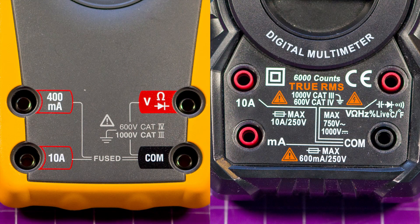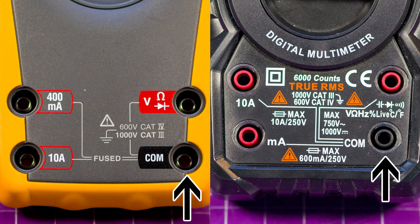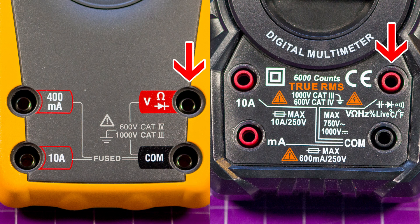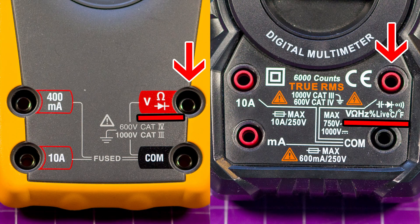As for which jack you're going to plug your leads into, well I'll let you know before every single measurement but in general the black lead will go into the black jack labeled COM. The red lead most of the time will go into what I like to call the multifunction jack. That's the jack with all the labels, volts, ohms, etc.